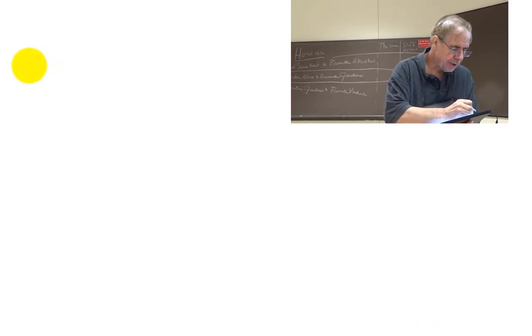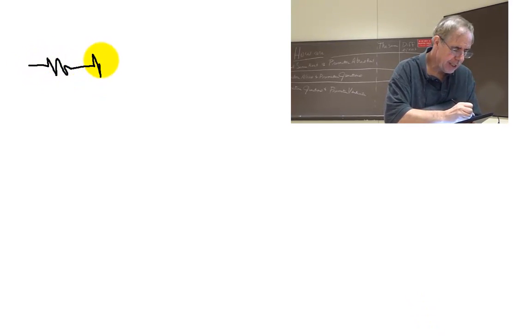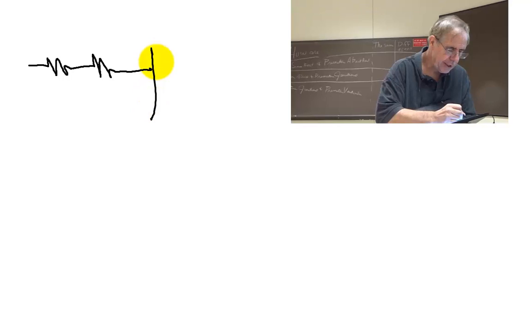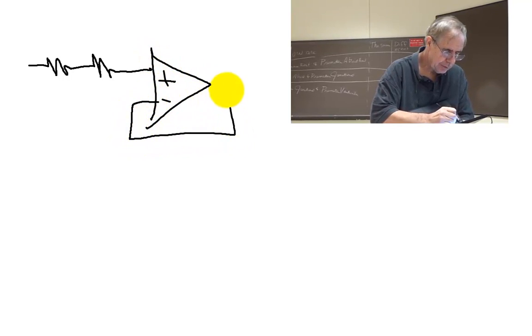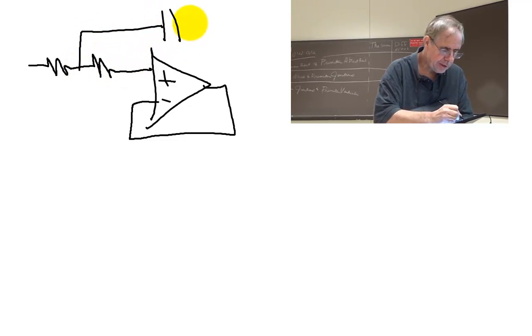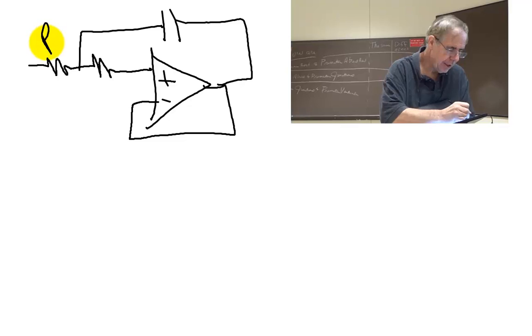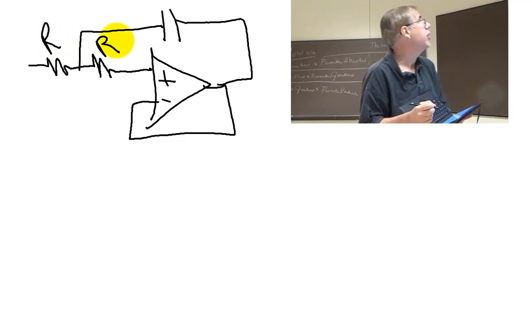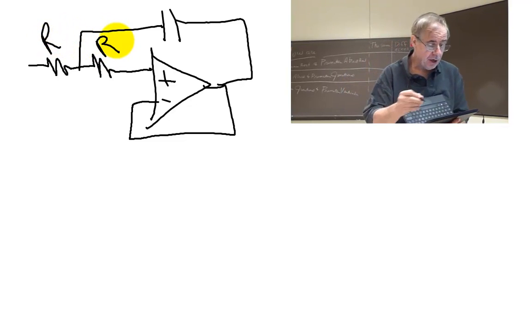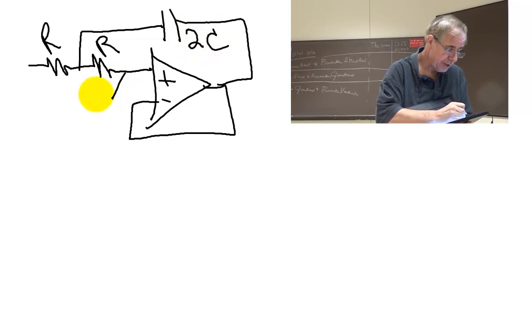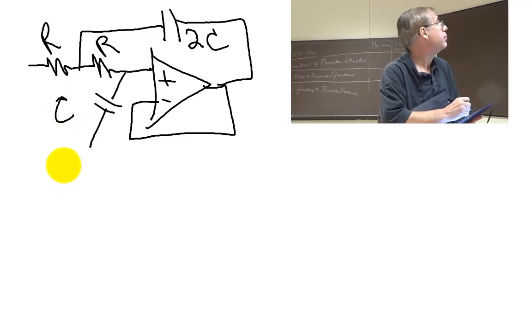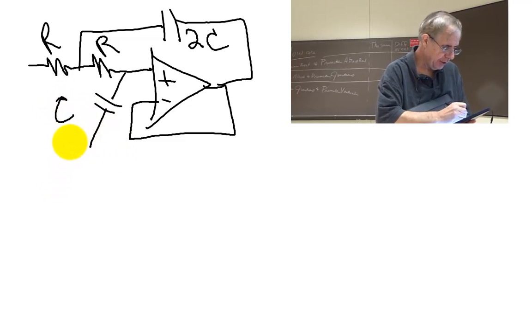This filter has a format called Salen and Key. It is a template such that whenever I put in an R, I'm going to put the same R over there. This one is going to have a 2C and this one's going to have a 1C. Now in the book it puts a reference right here. I'm just going to ground it for today.